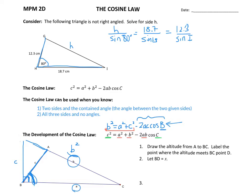Let me erase some of the extra stuff from the diagram. First, we want to draw the altitude — the height of the triangle — from A to side BC, so the height meets the opposite side at a 90-degree angle. We're going to label the point where it meets side BC as point D.